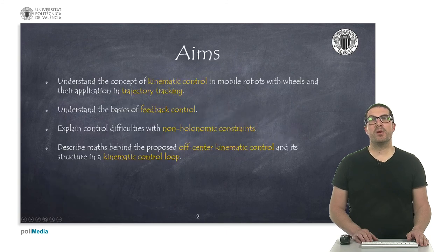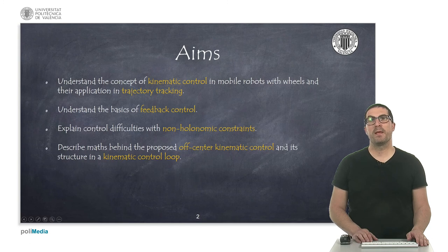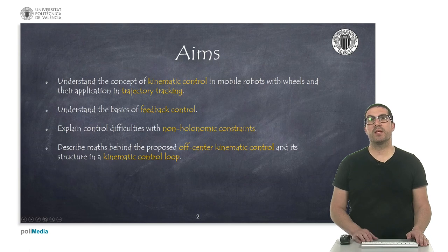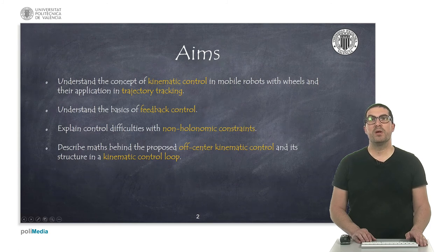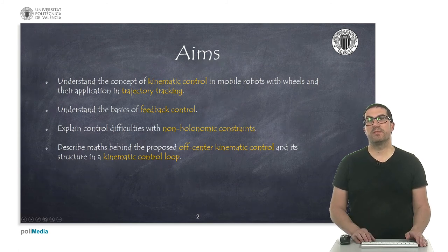The aim of the presentation is, on the one hand, to understand the concept of kinematic control and its application for trajectory tracking. I will explain some basic concepts on feedback control, specifically for mobile robots with wheels, and the difficulty of their kinematic control as a result of being subject to a non-holonomic constraint that will appear in the vast majority of mobile robots.